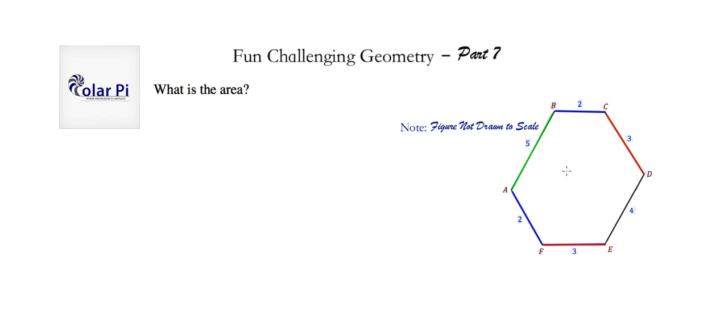Hey guys, welcome. So here's a really cool geometry question, and the question is, what is the area of this equiangular hexagon? So this hexagon is equiangular, but clearly not equilateral. And yes, it's possible to have an equiangular hexagon that's not equilateral.